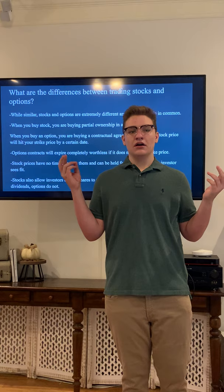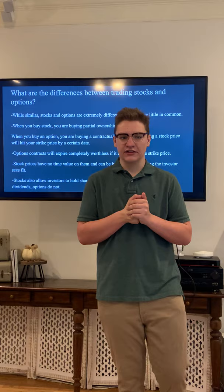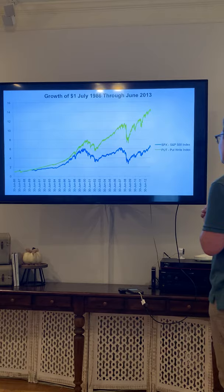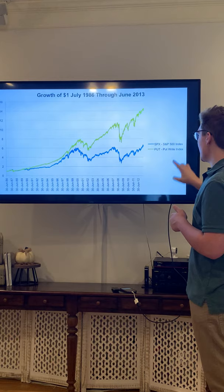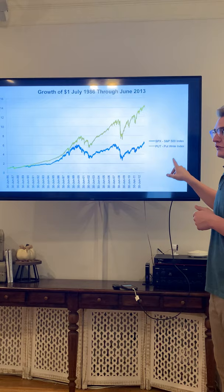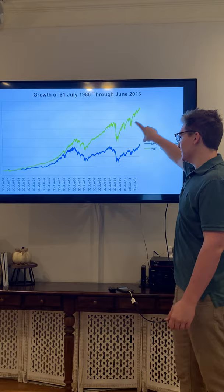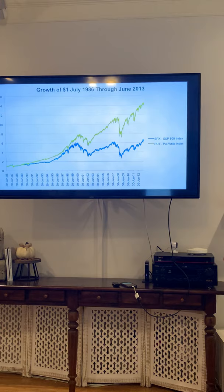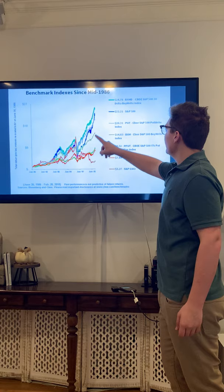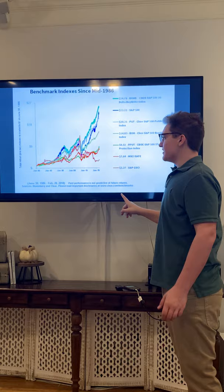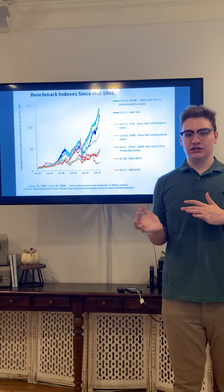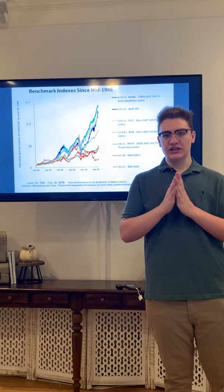Right here you can see side by side the S&P 500 index of the 500 largest companies in the United States and then the put-write index, which means they are writing puts against major ETFs or indexes such as the S&P. Writing protection against major ETFs generates much more money than simply putting your money in the ETFs alone. ETFs that focus on selling puts and selling protection, such as insurance companies, make the most money instead of investing in the actual assets themselves.